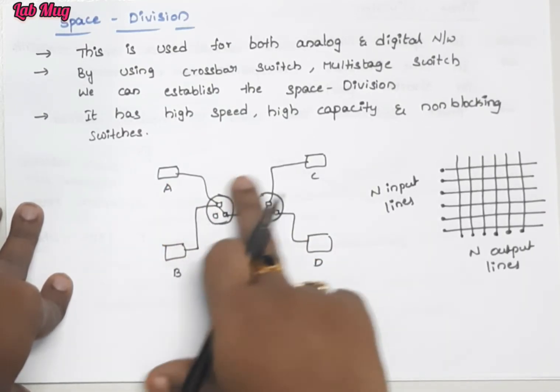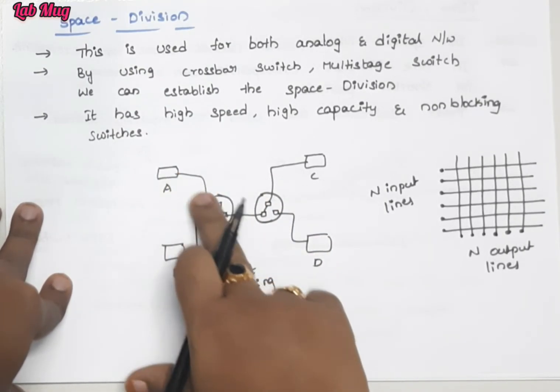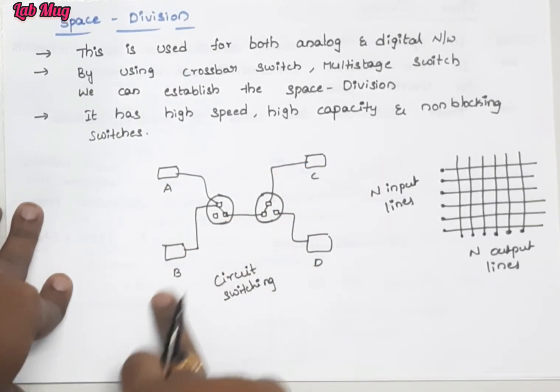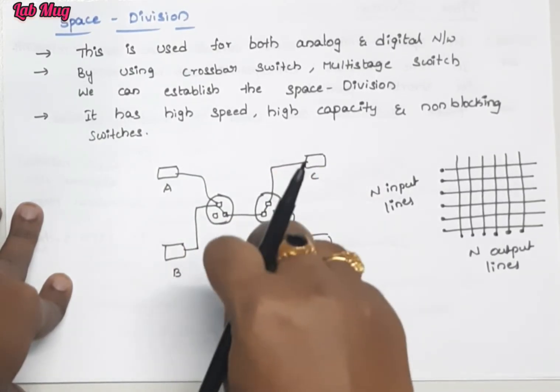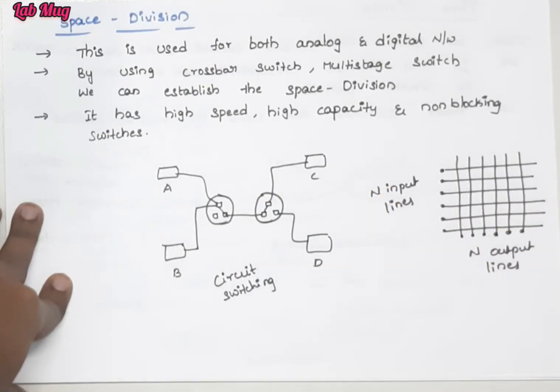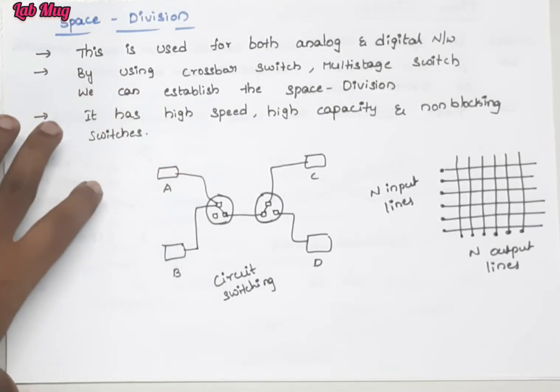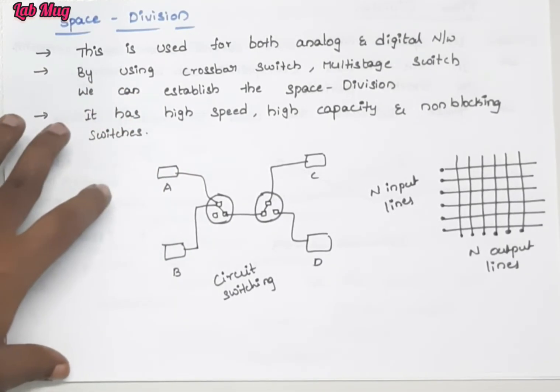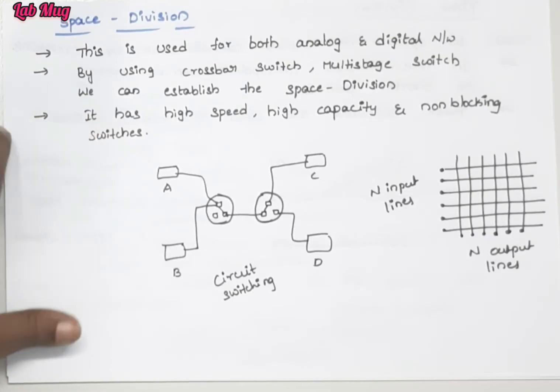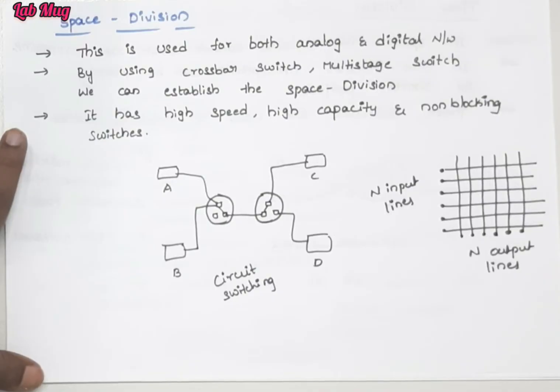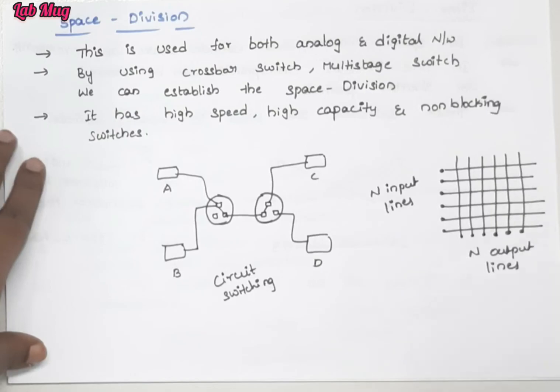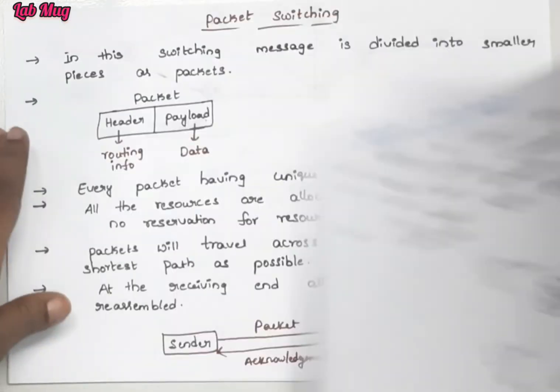I'll show you an example of crossbar switches. This is circuit switching, and between A, B, C, D we use switches. Through these switches we transfer data. By using space division multiplexing, where there is high capacity and high establishments, we can use this. We also use non-blocking switches with space division. Next is time division multiplexing.